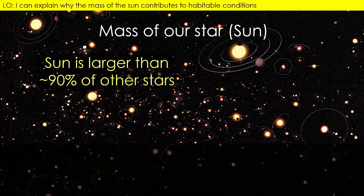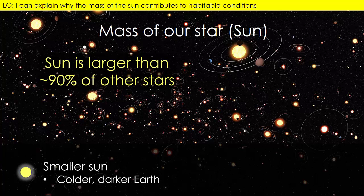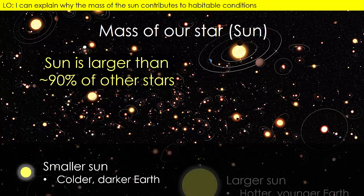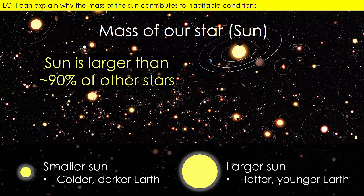Condition number two is that Earth orbits the right type of star. More than 90% of stars are actually smaller than our Sun and would provide less energy. In contrast, larger stars have a much shorter lifetime, maybe just a few million years, not nearly long enough to support the evolution of complex life.